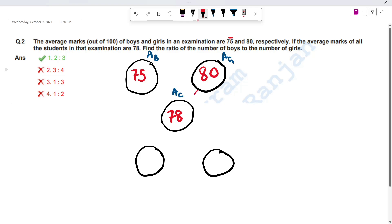From 80 to 78, how much is that? 2. And from 78 to 75, how much is that? 3. So the ratio is 2 to 3. That is the boys to girls ratio.